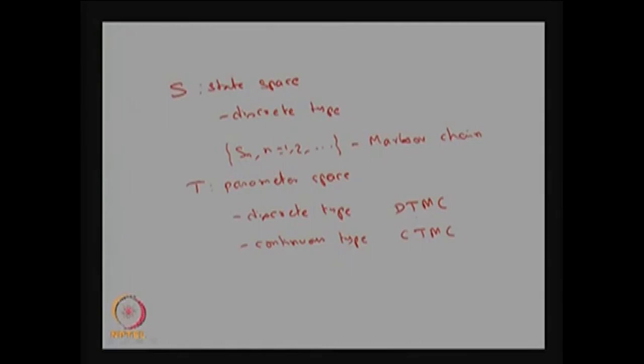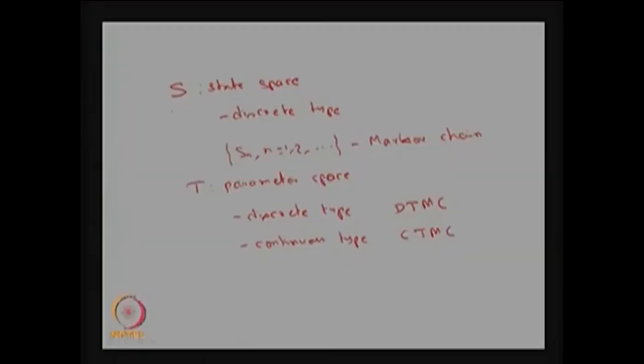In this model we are going to study the discrete time Markov chain. Models 4 and 5 will discuss the continuous time Markov chain. In general, a stochastic process satisfying the Markov property is called a Markov process. Based on the state space it is called a Markov chain, and based on the parameter space it is called a discrete time or continuous time Markov chain.